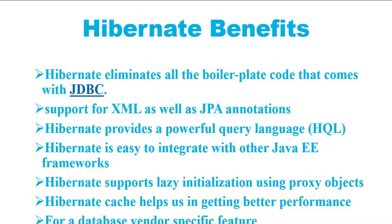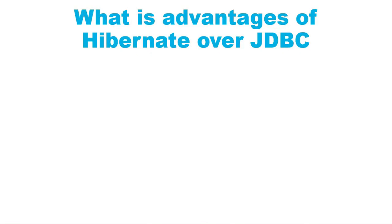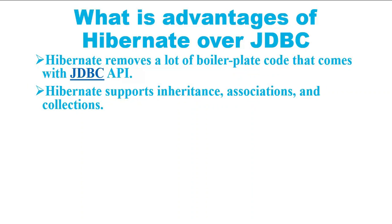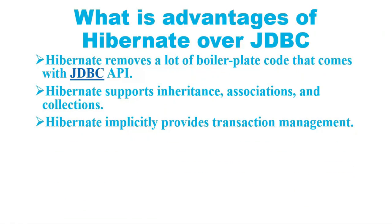Overall, Hibernate is the best choice in the current market for an ORM tool — it contains all the features you will ever need. Now let's look at the advantages of Hibernate over JDBC. First, Hibernate removes a lot of boilerplate code that comes with the JDBC API, and the code looks cleaner and more readable. Hibernate also supports inheritance, association, and collections — features that are not present in the JDBC API.